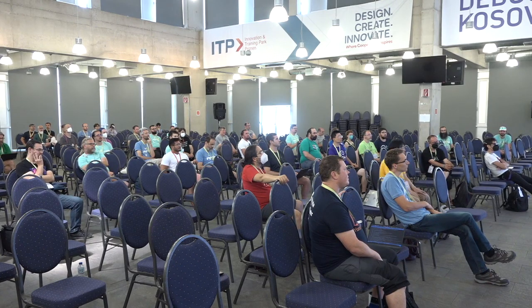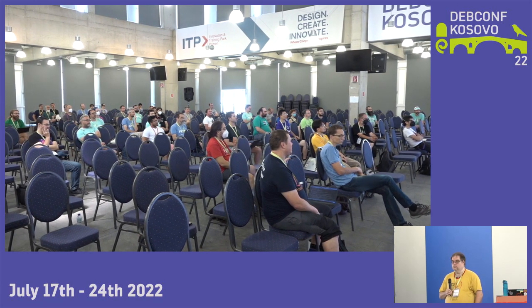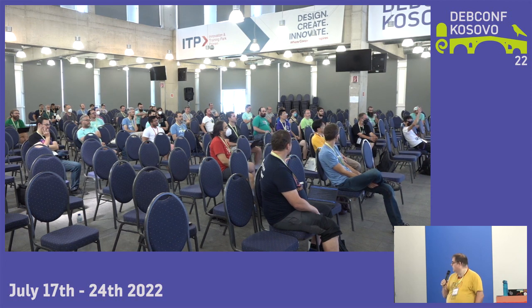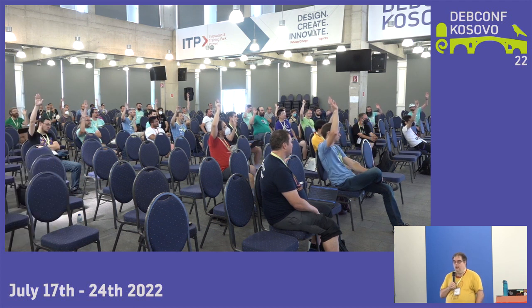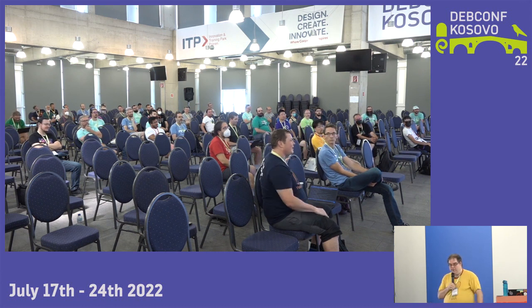Steve asks for a show of hands on the options. Option one (carry on as-is) gets no hands. Option two (stop non-free images entirely) gets zero. Option three (make non-free images official) gets a reasonable number of hands. Option four (include firmware in all official images) also gets hands. He then asks if anyone has an option five.